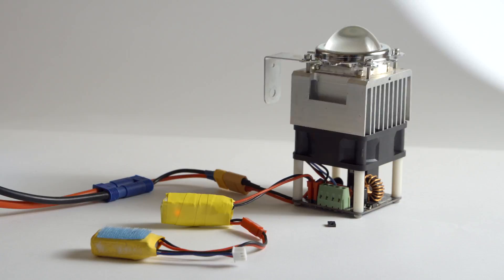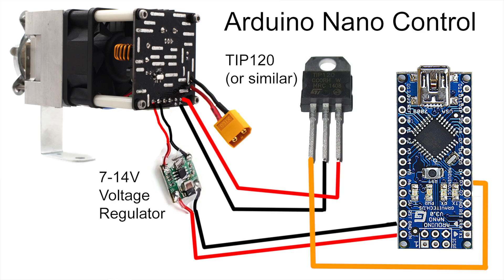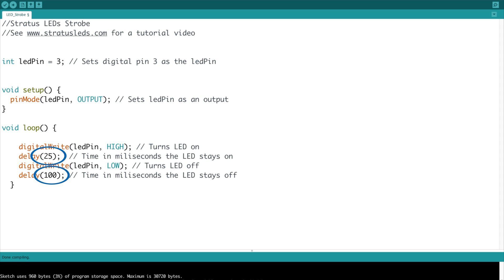You can also use an Arduino to control the LED modules with an additional transistor. Here's a wiring diagram of how you can make a strobe flasher with an Arduino. The code is available in the video description. You can change the flicker time by adjusting these two values.